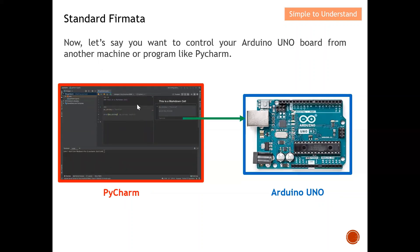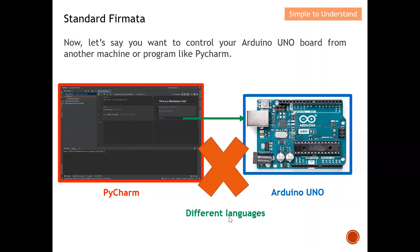Now, instead of Arduino IDE, let's say we want to control the Arduino Uno board from another program like PyCharm. The issue is that Python and Arduino are from different companies. PyCharm speaks Python language and Arduino speaks Arduino language. Because they speak different languages, PyCharm's instructions cannot be directly sent to the Arduino Uno board — the board will not understand and will not execute them correctly.